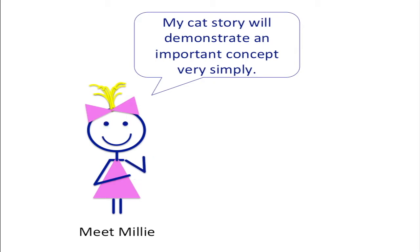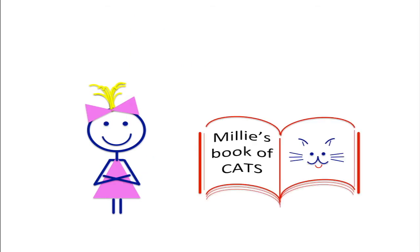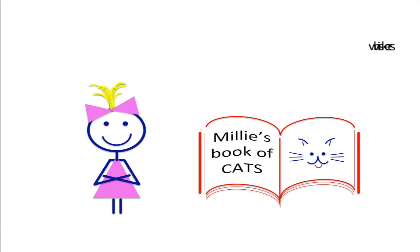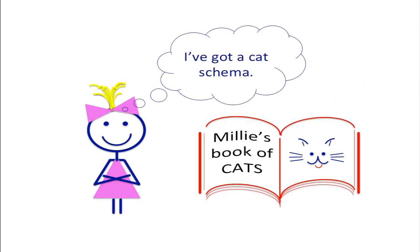So here's Millie. Her first experience of a cat was from a book that her mum would read to her, when she learned that a cat is small, has four legs, whiskers and a tail, and it has adventures. And for a while this would have been the only experience Millie had of a cat, so it became her cat schema.